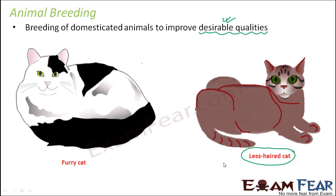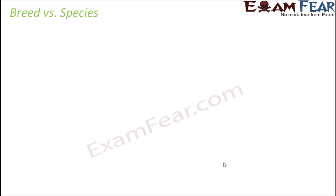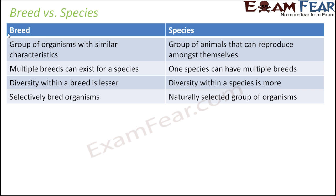Before we talk about the different techniques for animal breeding, it is very important to understand the difference between breed and species. When we talk about a breed, it is a group of organisms with similar characteristics — organisms that share more similarities within the group. When we talk about species, these are organisms which also share similarities but share fewer similarities compared to a breed. Organisms within a species can reproduce amongst themselves.